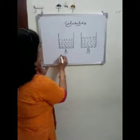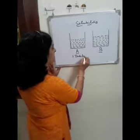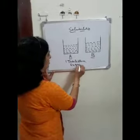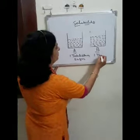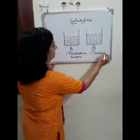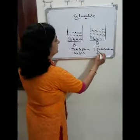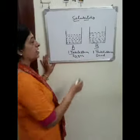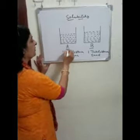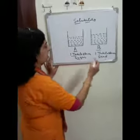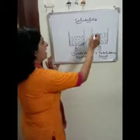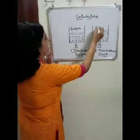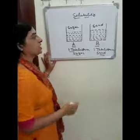Now, take one tablespoon of sugar and one tablespoon of sand. Add the tablespoon of sugar into beaker A and the tablespoon of sand into beaker B.